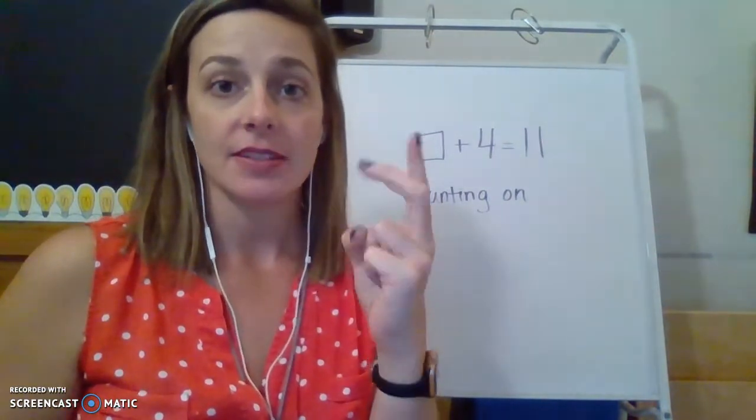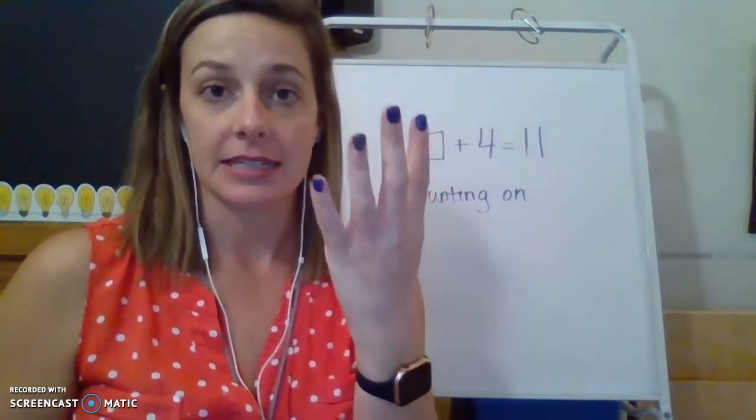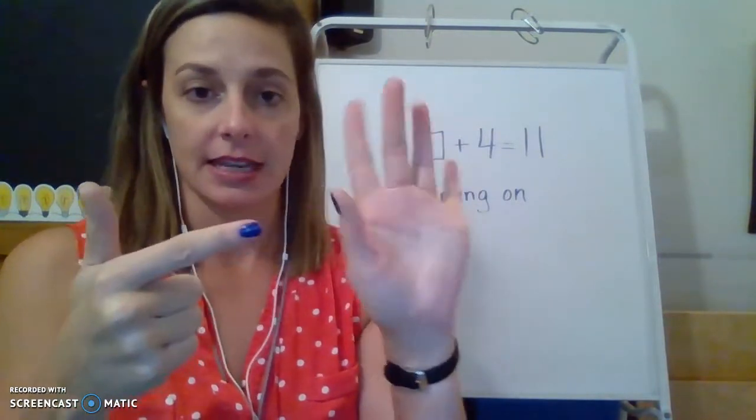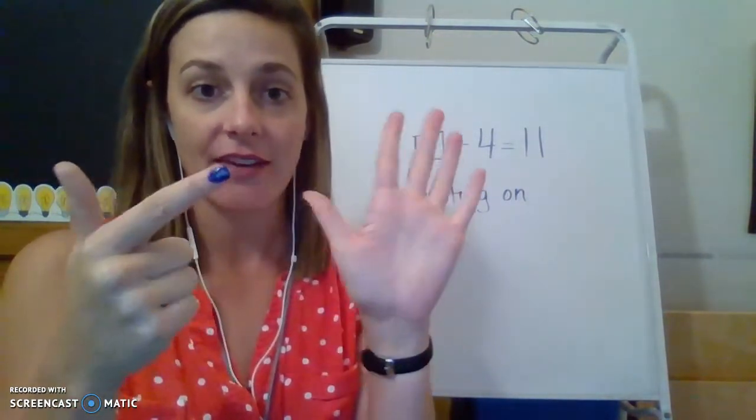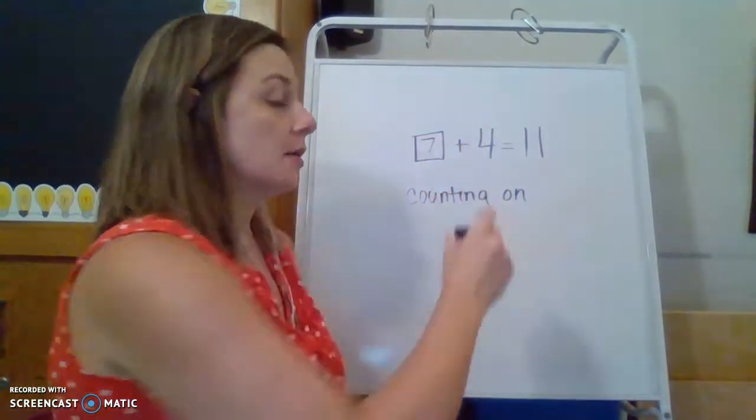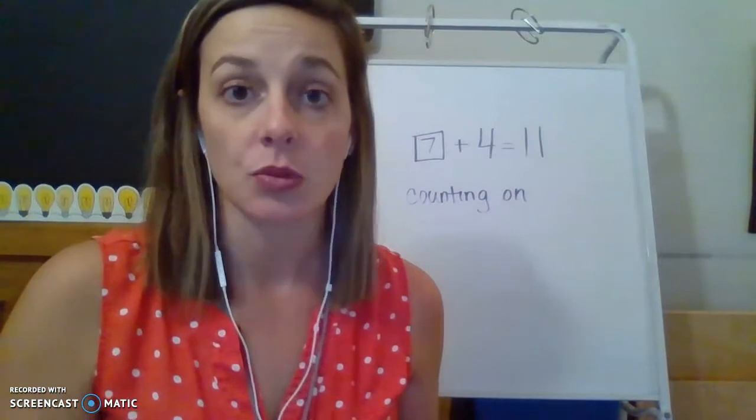Four, five, six, seven, eight, nine, 10, 11. Okay. Let's see. I have five, six, seven fingers up. That means that seven plus four is equal to 11.